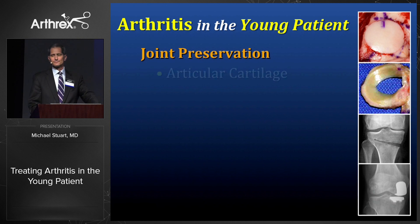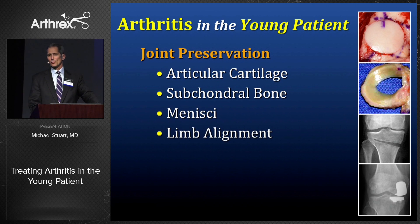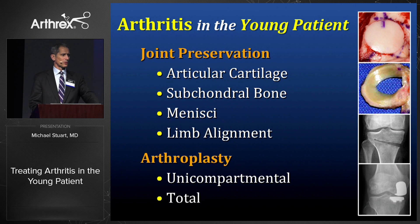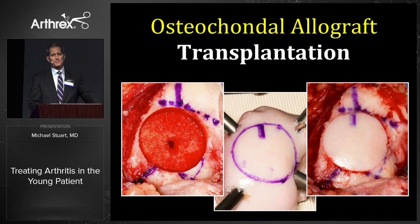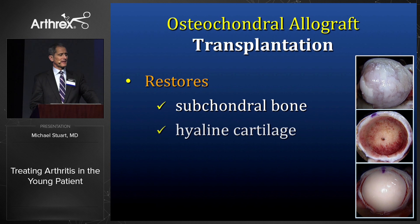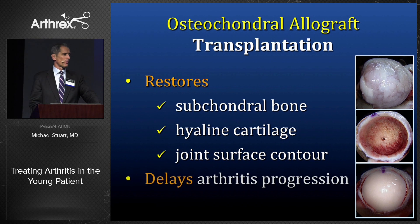First, we start with joint preservation. We want to try to restore articular cartilage, subchondral bone, and menisci when needed, and realign the limb accordingly. If that's not an option, we turn to arthroplasty — resurfacing the joint in one compartment or multiple compartments, unicompartmental or total knee arthroplasty. We saw good talks this morning on ways to transplant fresh or cryopreserved articular cartilage and bone. It's an effective technique for the right indications — you can reestablish joint surface contour using live hyaline articular cartilage, hopefully delaying arthritis progression.